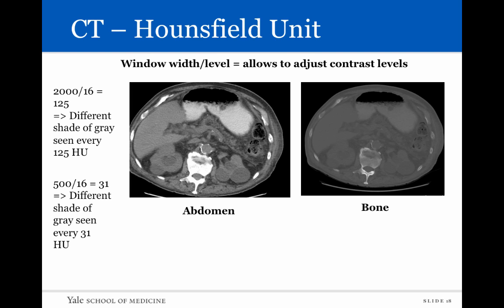Another important concept is window width and window level. We can change these values to adjust contrast levels, allowing us to see different types of densities more clearly. Window width is the range of Hounsfield units displayed on a CT scan — from minus 1,000 to positive 1,000, that's about 2,000 Hounsfield units. The problem is that the human eye can only differentiate about 16 shades of gray. With a wide window, dividing 2,000 by 16 means you can only differentiate very few types of radio density. By narrowing the window width — say to a range of 500 Hounsfield units from minus 100 to positive 400 — dividing by 16, those Hounsfield units can now be shown across many more distinguishable shades of gray.